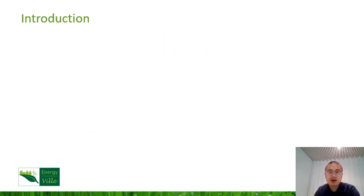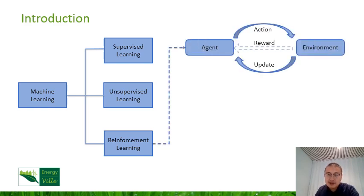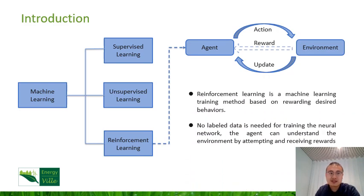Reinforcement learning is one major branch of machine learning, other than supervised learning and unsupervised learning. The idea of reinforcement learning is to allow the computer to train itself by interacting with the environment, and in the meantime adjusting its decisions based on rewards, and finally find the optimal scheme to achieve the goal. One of the major advantages is that no labeled data is required for training. The agent can understand the environment by adapting different actions and receiving different rewards. So the definition of environment and rewards are very important for reinforcement learning training.